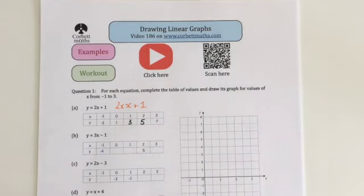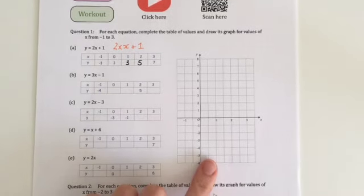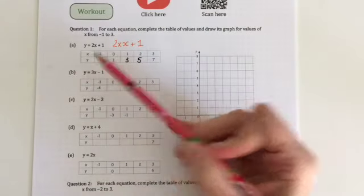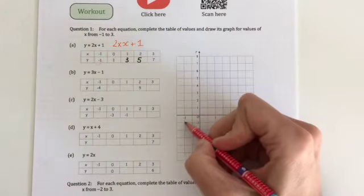And then all you have to do is plot the points on the graph. The graph is drawn for you and the axes are drawn. So these are the coordinates. We've got negative 1, negative 1, which is there.